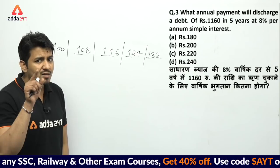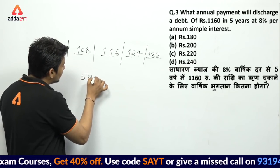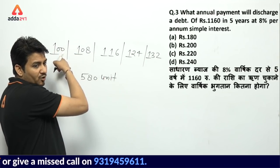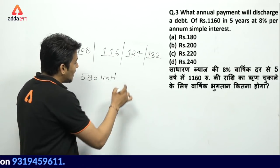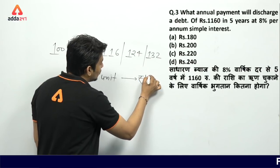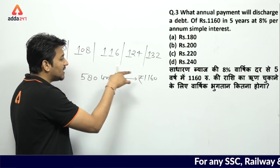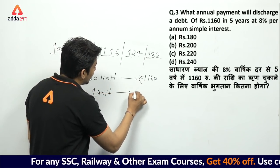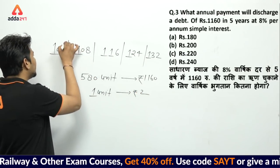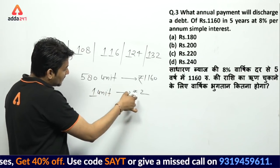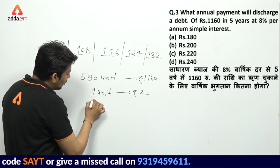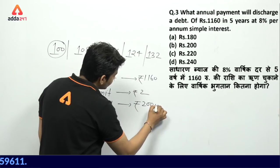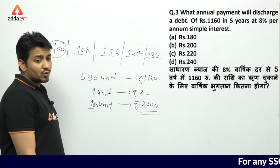580 units value is 1160 rupees. So 1 unit = 2 rupees. Installment is 100 units, and 1 unit represents 2 rupees, so 100 units = 200 rupees. Your installment is 200 rupees. Option B.